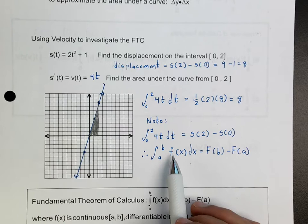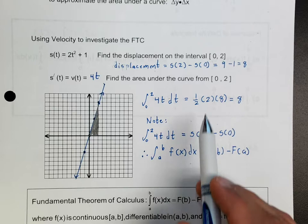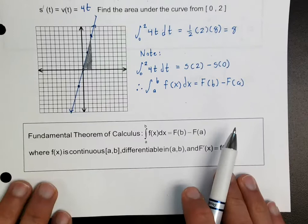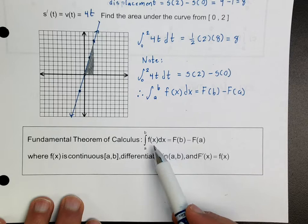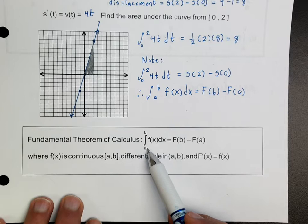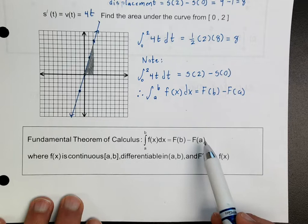So we have the integral of f(x) dx is equal to F(b) minus F(a). When I write a capital F, that basically means that's the antiderivative of f. The Fundamental Theorem of Calculus says: take the integral, plug in the upper limit b, find the numeric value, then plug in the lower limit a, find the numeric value, subtract them, and you get the area under the curve — assuming that f(x) is continuous and differentiable.